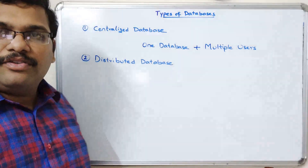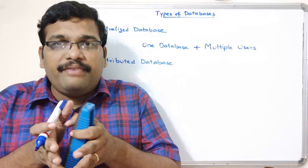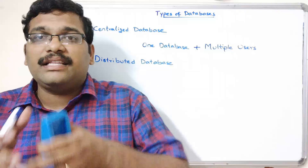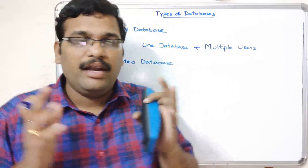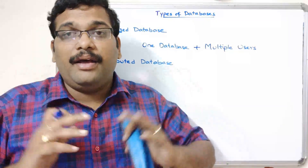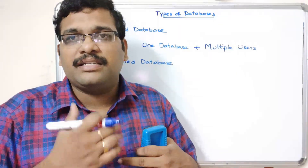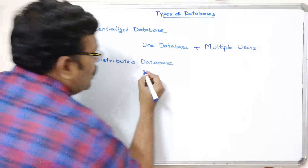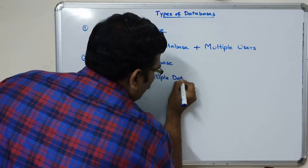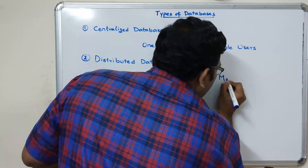The second type is the distributed database. The name itself indicates that the database is distributed across different places. Multiple users can access multiple databases at the same time. Based on the end users, the database is divided, so here we have multiple databases and multiple users.